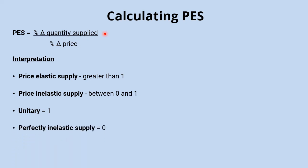At the theoretical extremes, perfectly inelastic supply gives a value of 0, because any change in price has no impact at all on quantity supplied. At the other extreme, perfectly elastic supply gives a value of positive infinity, where changes in price have an infinite impact on quantity supplied.